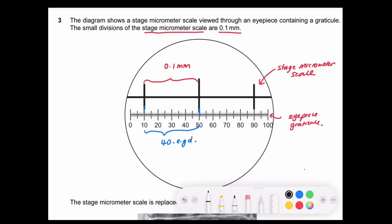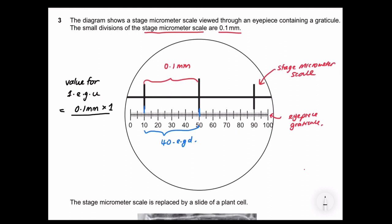So now if following the formula, we know that the value for one eyepiece reticule unit will be equivalent to the number of division of the stage micrometer. So we have one division only. So I just put 1 divided by how many divisions the eyepiece? 40 eyepiece reticule division. So I will get 0.0025mm.